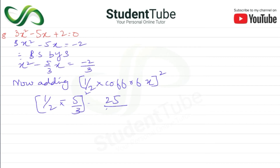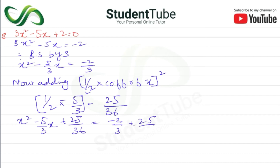The equation then becomes: x squared minus 5 upon 3 times x plus 25 upon 36 is equal to minus 2 upon 3 plus 25 upon 36. The left side factors as x minus 5 upon 6, whole square. On the right side, we take the LCM.